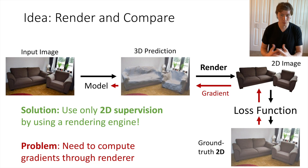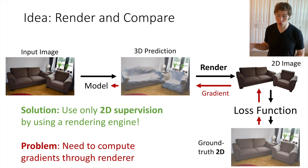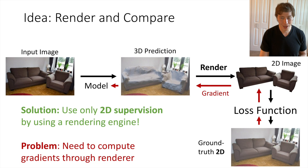If we can set up this render-and-compare system, we could potentially backpropagate all the way through and learn to make 3D predictions using only 2D supervision or 2D losses. But a big technical problem is that we need to compute derivatives through this rendering process. For that, we need to introduce differentiable rendering — a differentiable version of a renderer that inputs 3D shapes, textures, camera coordinates, and lights, and outputs a 2D RGB image that can be used in a deep learning pipeline.